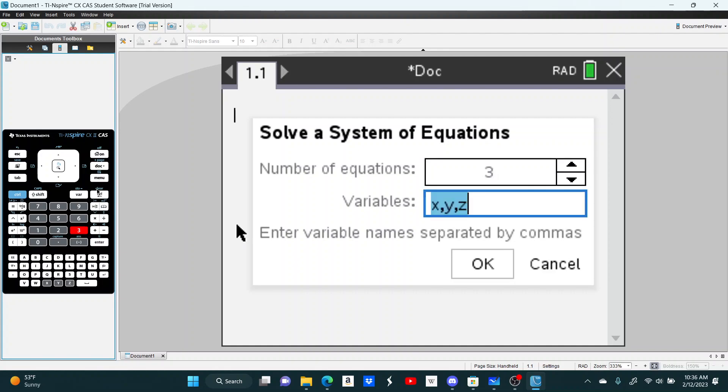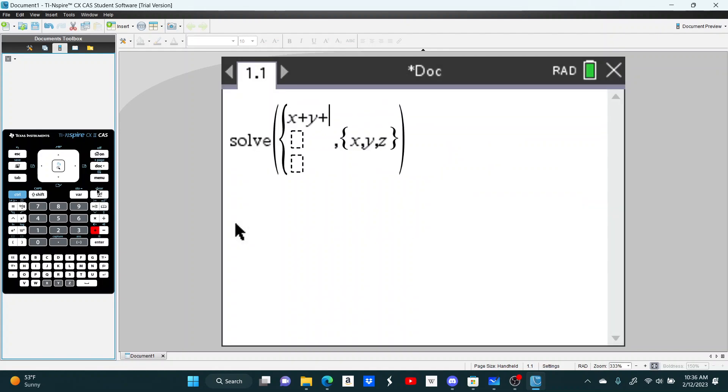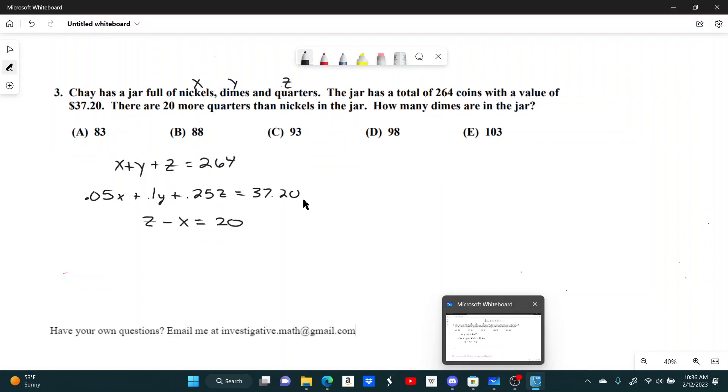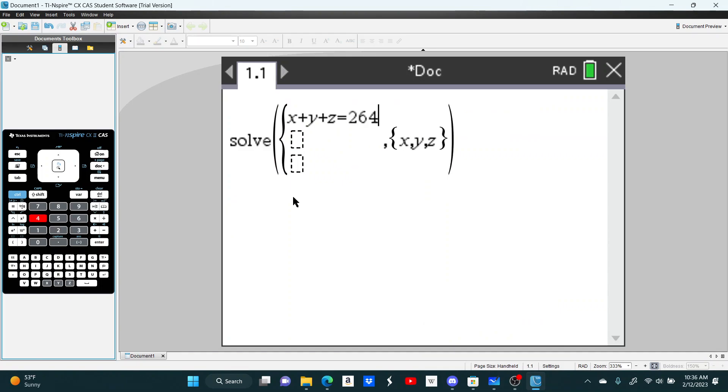I'll have three equations with three variables: x, y, and z. So x plus y plus z equals... what was that, 42? Nope, 264. Not sure where I got that from.